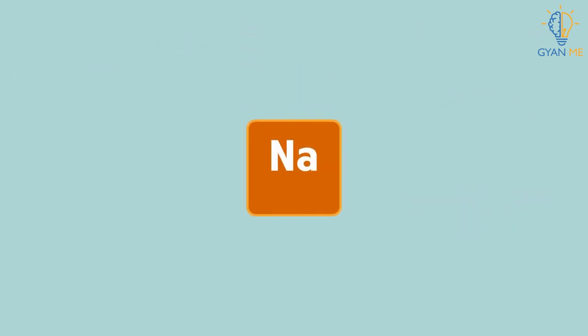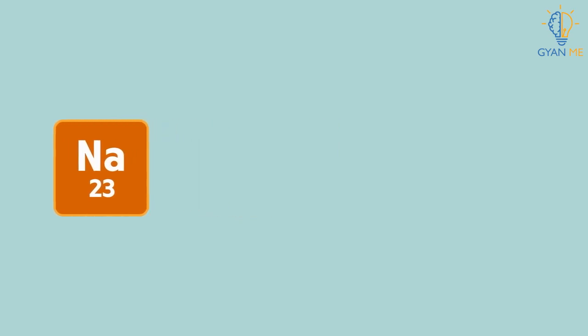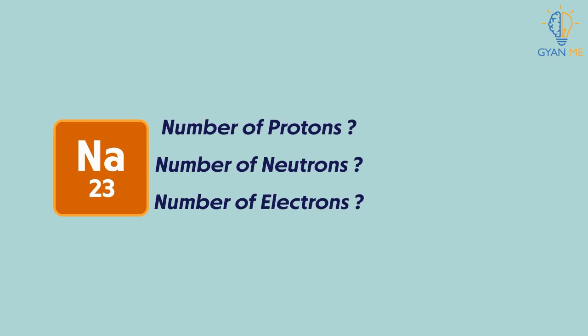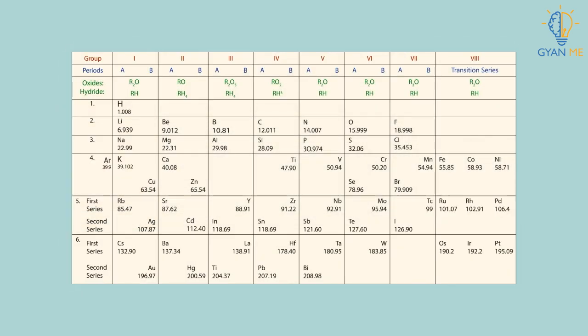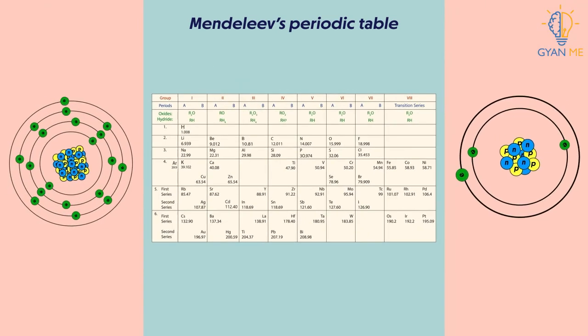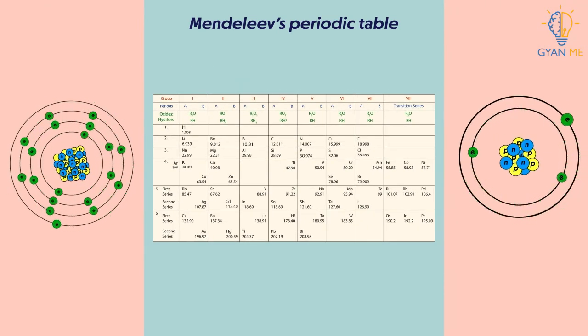For example, we take sodium. We know from the table that its weight is 23. Now, from this information, can you tell me how many protons and neutrons it has? Or how many electrons are there in the orbit? The answer is no. And this is true for all elements, right? Yes. We don't get any information regarding structure of atom from the masses given in the table. Hence, we say that Mendeleev's periodic table gave no idea about structure of an atom, of that element.